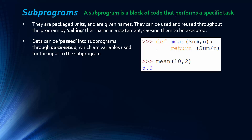Here's a relatively simple example showing these elements in Python. We're defining a function — a type of subprogram — which really just provides the instructions. The parameters here are 'sum' and 'n', and the name is 'mean'. We call the subprogram by using 'mean' with brackets, passing the data into the subroutine.